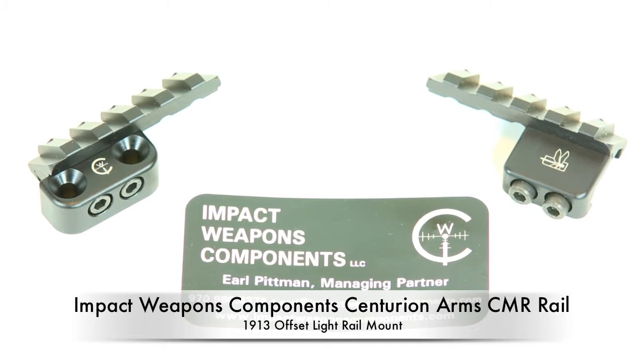The rails are the CMR rail and the Lewis Machine and Tool LM8 rail. This particular video we're going to be talking specifically about the offset mounting unit on the left in this video.